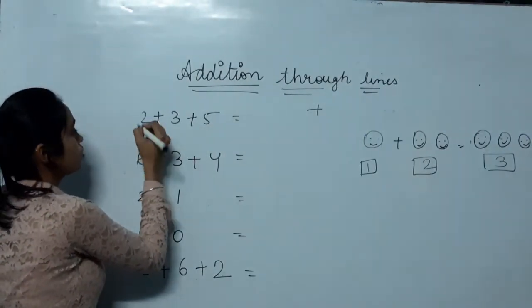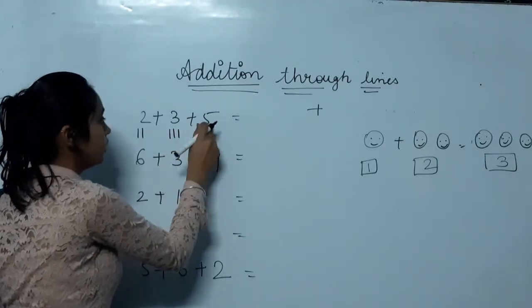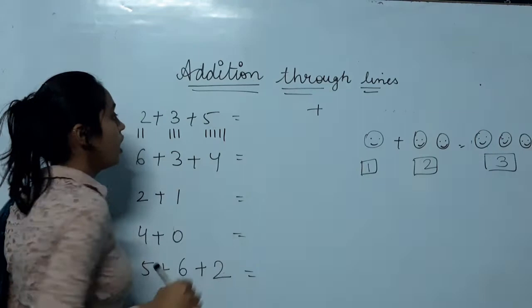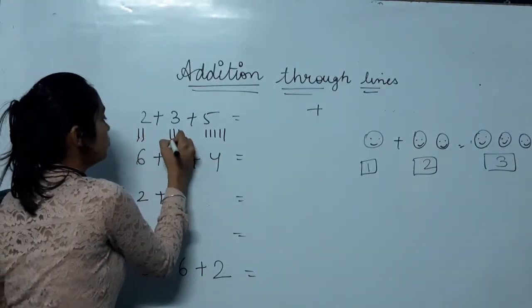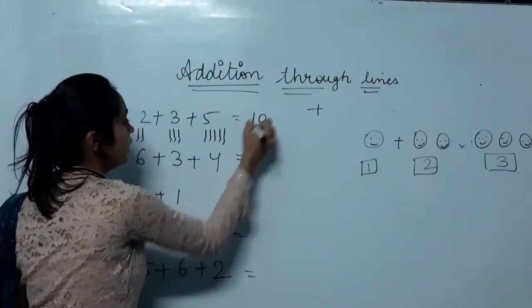So it is two. One, two. Here, what is this? Three. One, two, three. Here, how many? Five. One, two, three, four, five. Now you have all the lines drawn. What do you do? You write it. One, two, three, four, five, six, seven, eight, nine, ten. So the answer is ten.